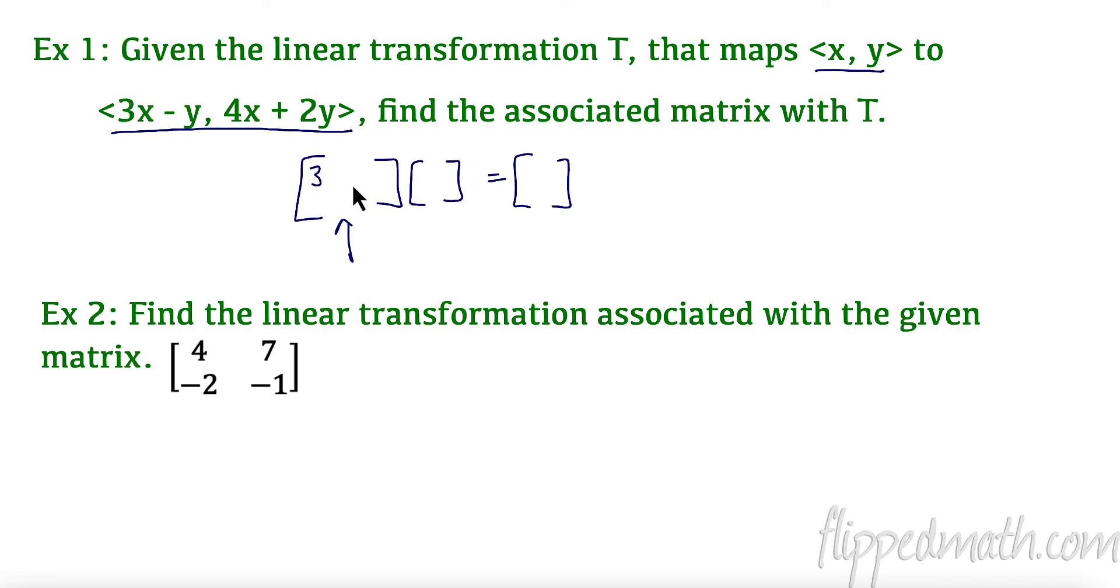So my associated matrix is going to be here and it's made up of parts. It has an x part here. My x component is going to go my row one, so three and negative one, and it has a y component here, four and two. And that is the associated matrix right there. That's it.